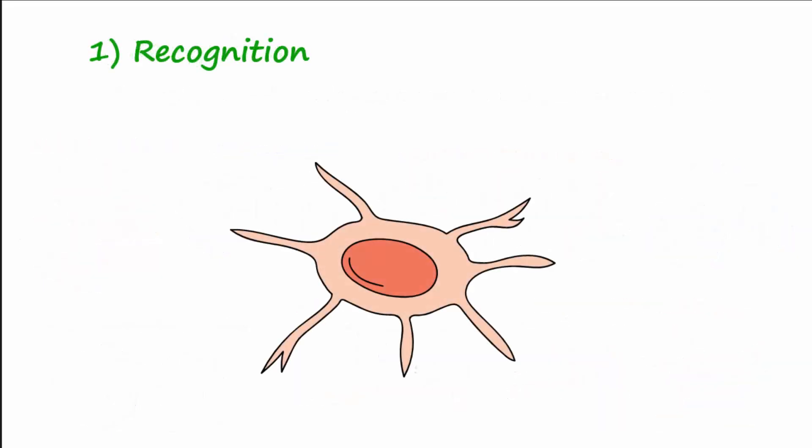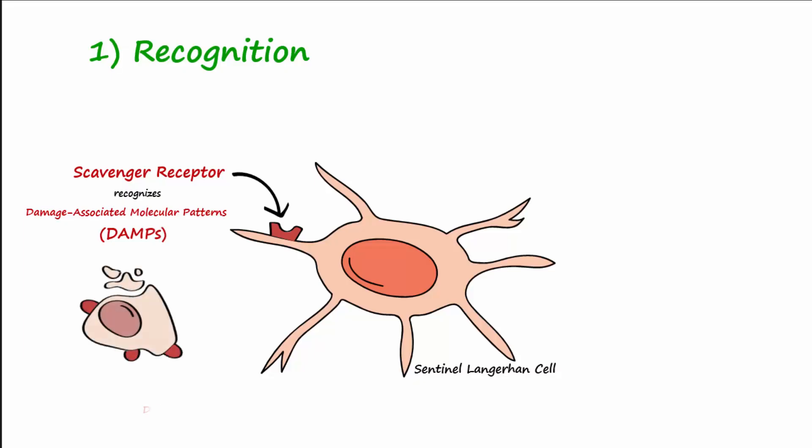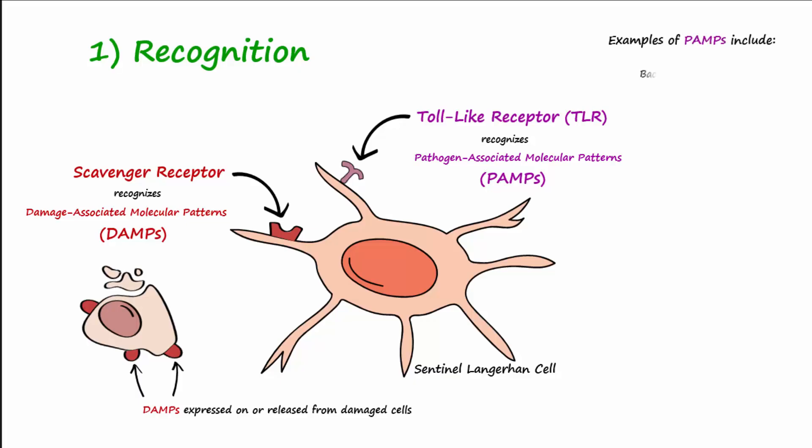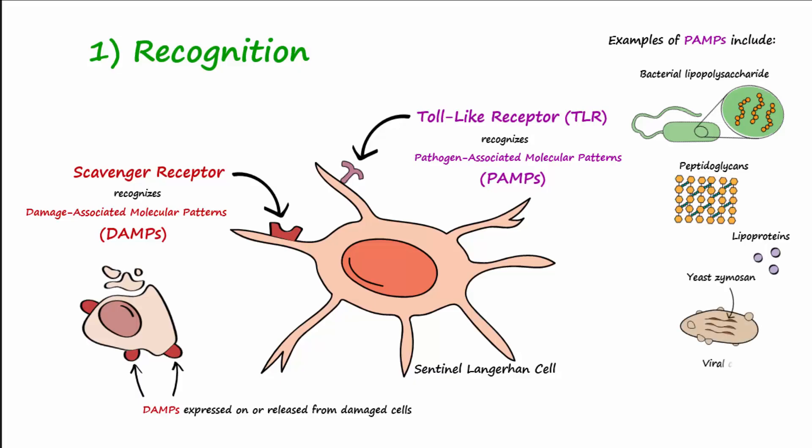Sentinel cells have specialized receptors known as scavenger receptors that recognize molecules associated with damage. These molecules are referred to as damage-associated molecular patterns, or DAMPs, and are proteins released from or expressed by damaged cells. Sentinel cells also have toll-like receptors called TLRs that recognize molecules associated with pathogens, called pathogen-associated molecular patterns, or PAMPs. Examples of PAMPs include bacterial lipopolysaccharide, peptidoglycans, lipoproteins, yeast zymosan, viral coat proteins, bacterial flagellin, and microbial nucleic acid.